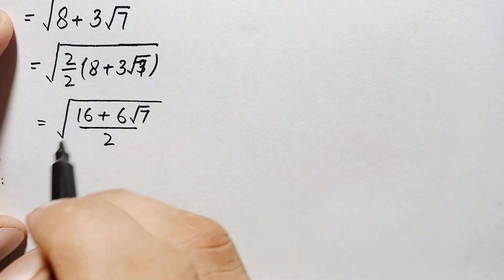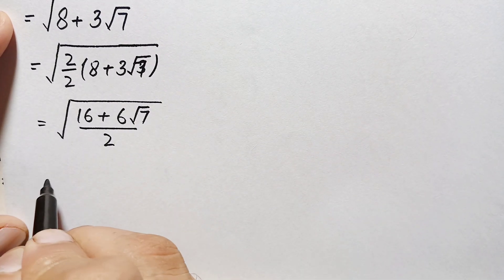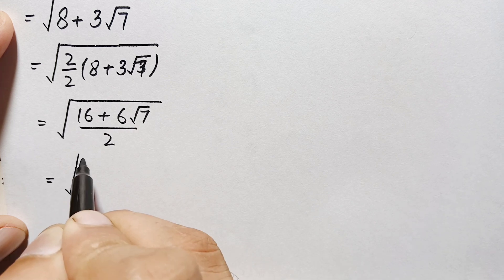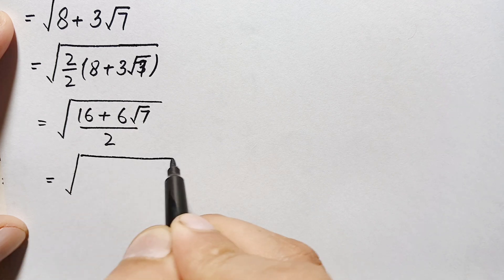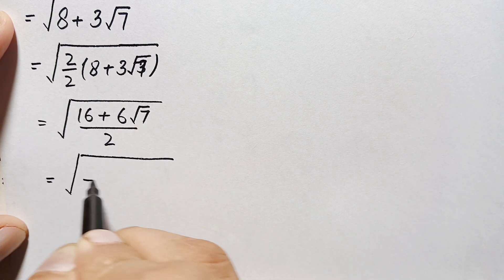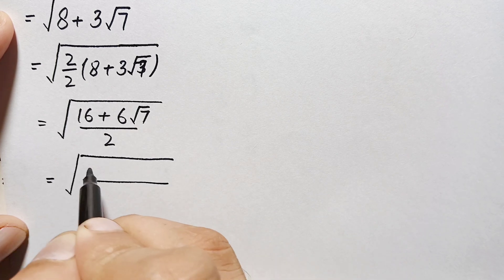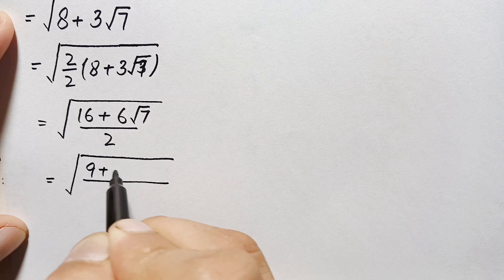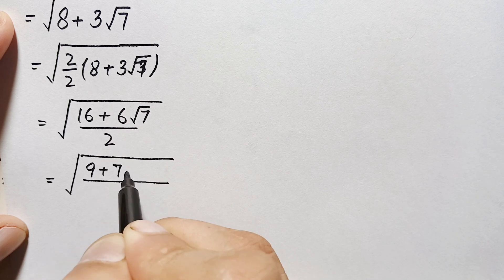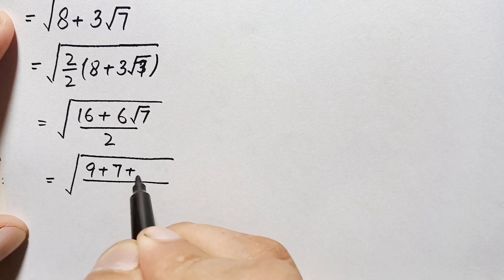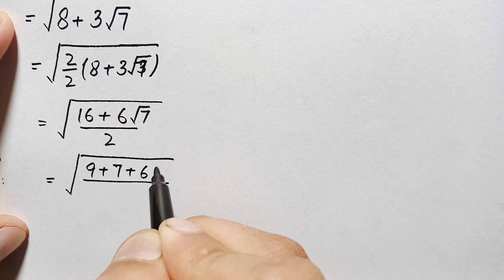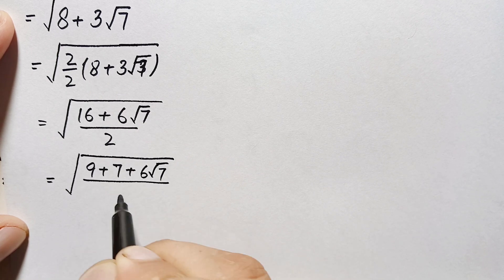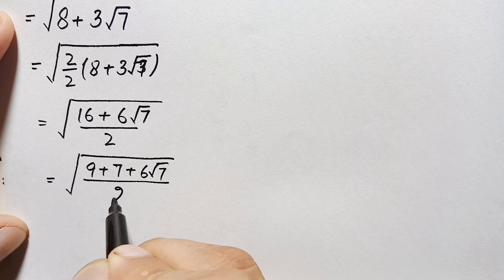Next, we can write 16 as 9 plus 7. So this becomes the whole square root of (9 plus 7 plus 6 times square root of 7) divided by 2.